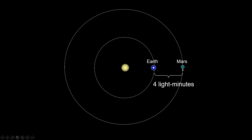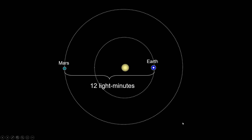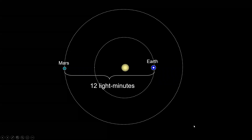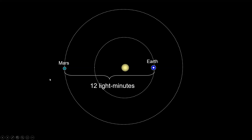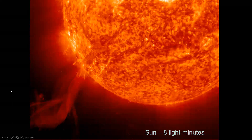And then if the person on Mars says 'hello,' it takes four minutes to get back. So that's a really big challenge for space travel — to think about those time delays, because if Mars is on the other side, it's going to be 12 minutes between 'hello' and 'hello.' So you pretty much have to have recorded messages, which we're getting really good at with YouTube and TikTok and so forth.